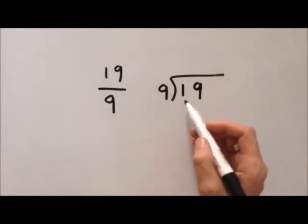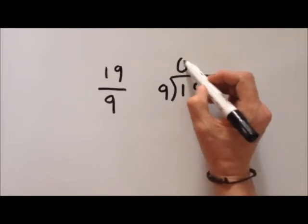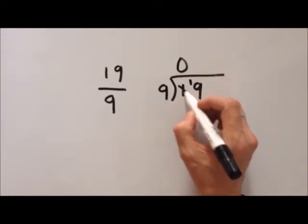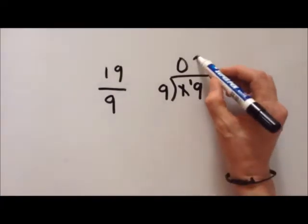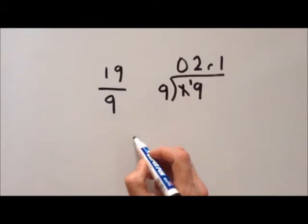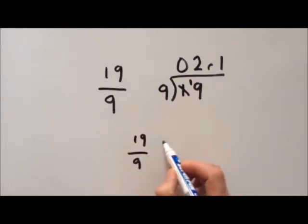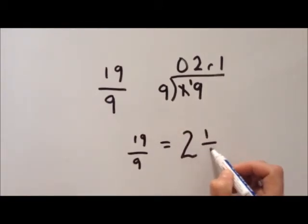Ok. How many 9s go into 1? We can't get 9 out of 1 so we put a 0 here and we put a remainder there of 1. So we put that there. How many 9s can we get out of 19? Once 9 is 9, 2 times 9 is 18. So that's 2 with a remainder of 1. So the answer would be 19 over 9 is equal to 2 and 1 ninth.